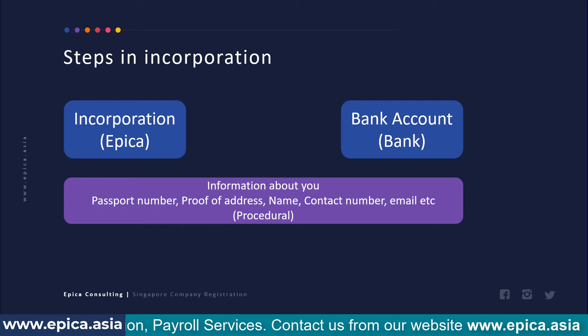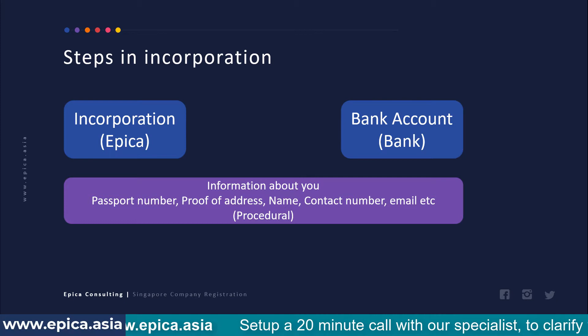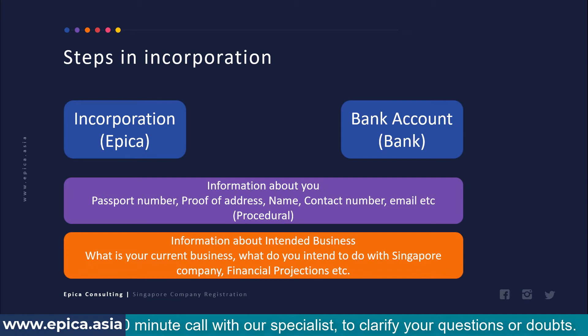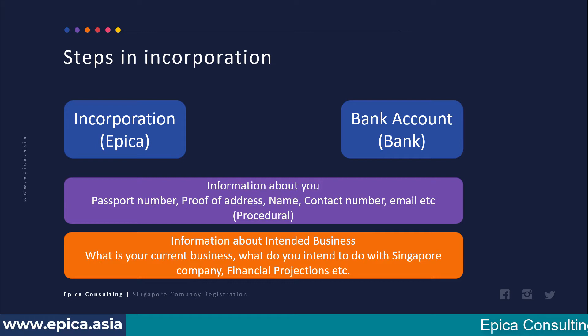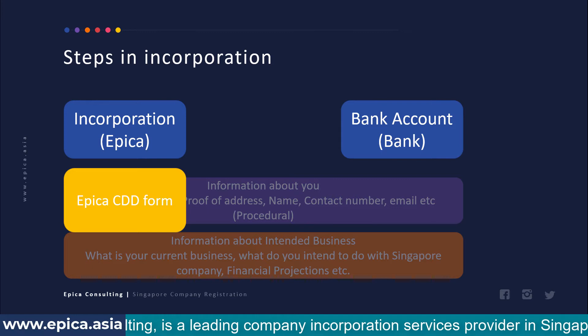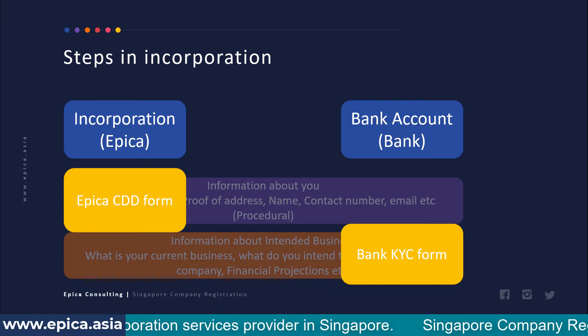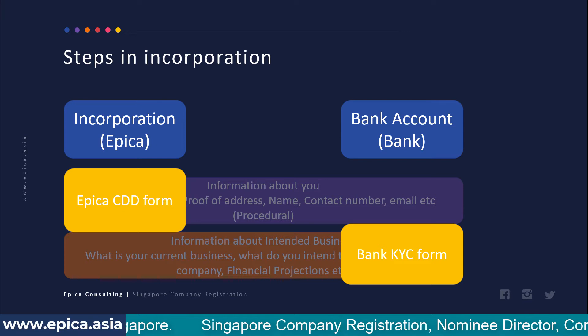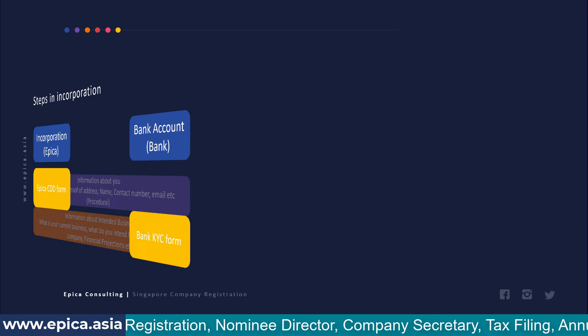For both these activities, two different sets of information are required. The first set is normally passport number, proof of address, your name, contact number, email — more about contact details and who you are. The second set is about what you intend to do: information about the intended business, your current occupation, what you intend to do in Singapore, your financial projections, and so on. The first part is normally covered by the EPICA CDD form, which I'm going to discuss in this video. The second part is normally covered by the bank KYC form, which I have already created another video for.